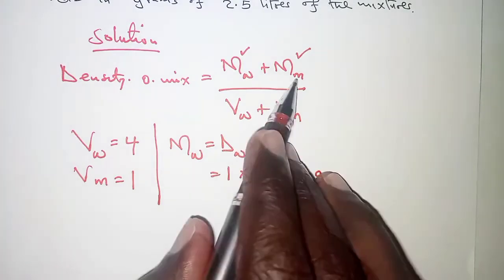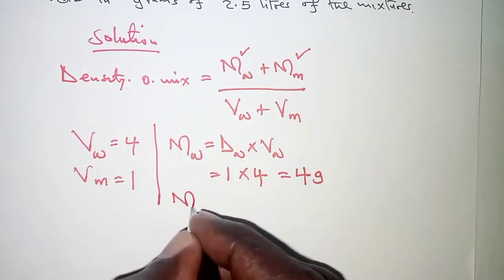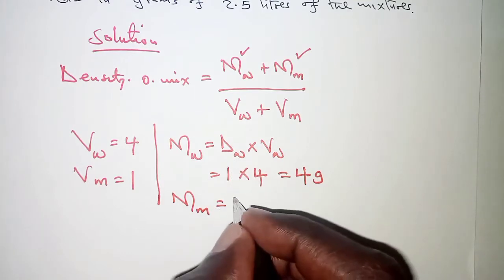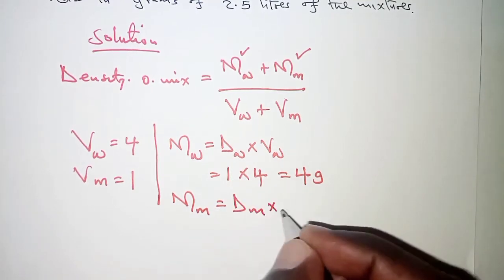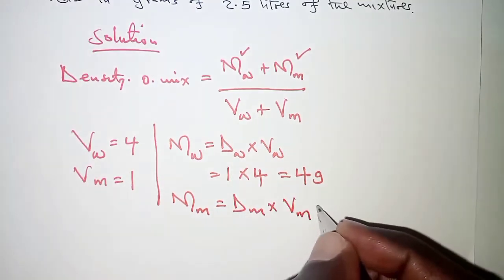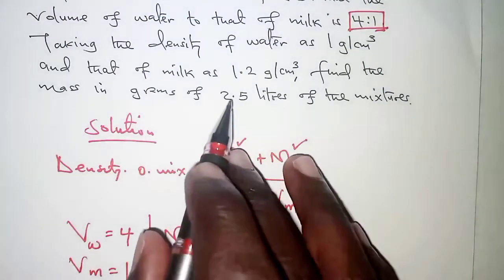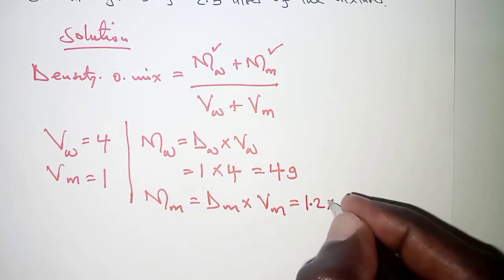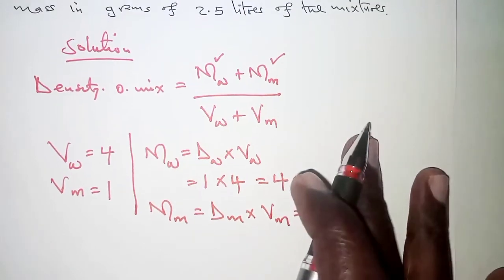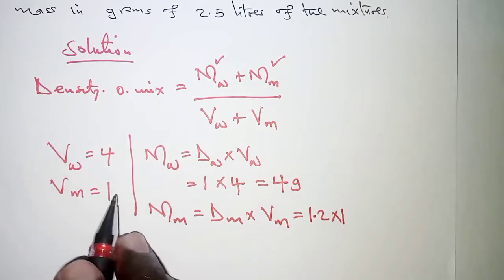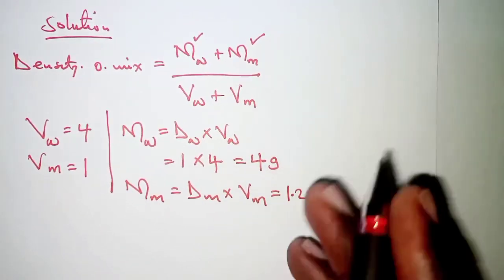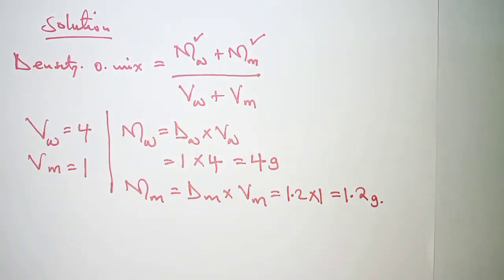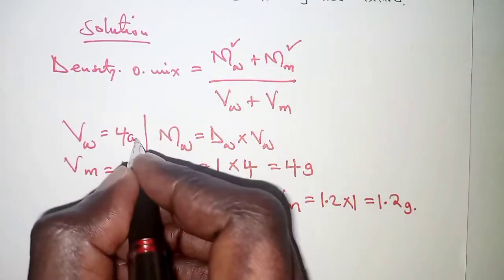The same applies for milk. Mass of milk is obtained as density of milk times volume of milk. Density of milk is 1.2, times the volume of milk which is 1 according to the ratio. When we multiply we get 1.2 grams. Remember these volumes are in cubic centimeters.